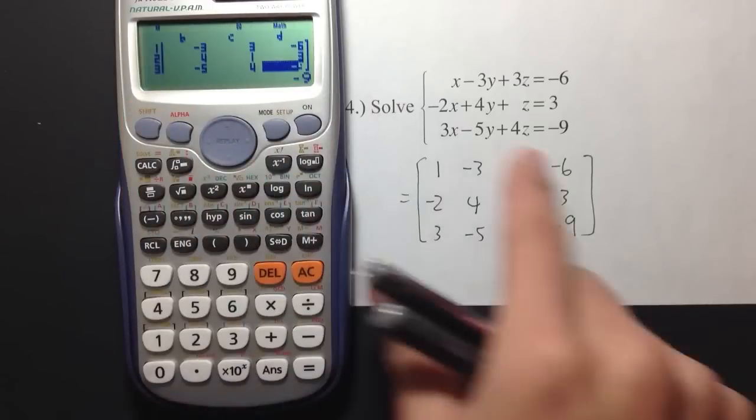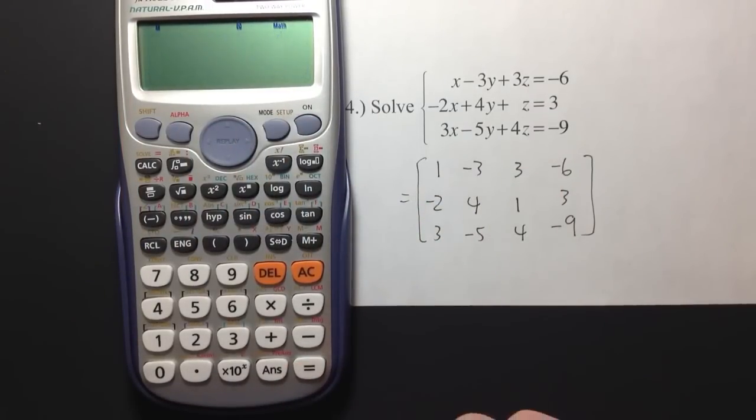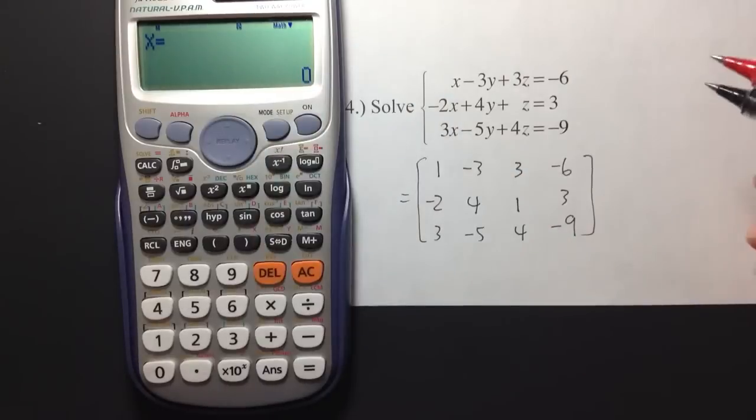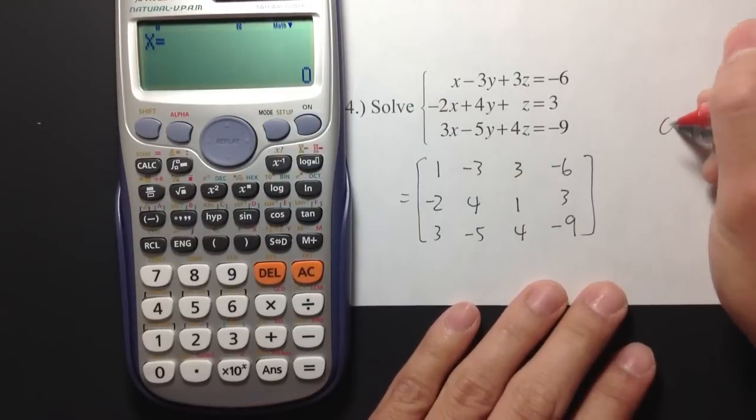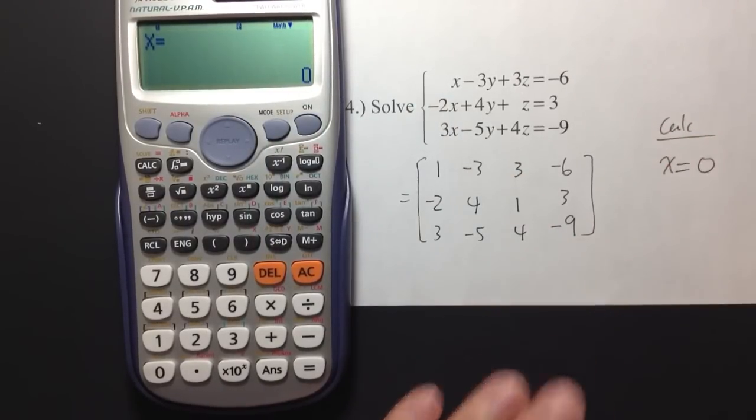Okay. So, I enter all the numbers. Then, I just need to press equal. Then, we have x is equal to 0. So, on the calculator, let's put a note, this is on the calculator. We get x is equal to 0.